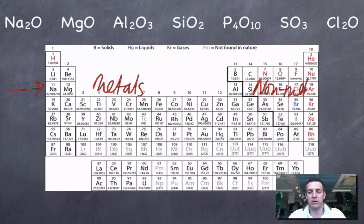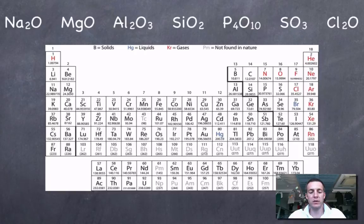Now hopefully you know that oxygen is a nonmetal. So when we combine these metals with oxygen we're going to get ionic bonds.